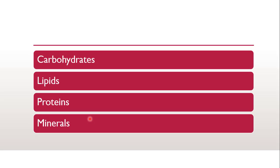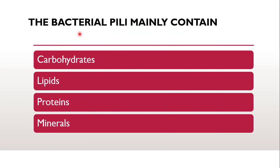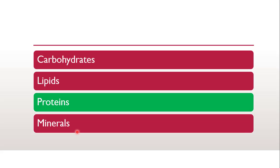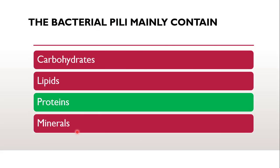The next question is: the bacterial pili mainly contains — whether carbohydrates, lipids, proteins, or minerals. According to the bacterial cell structure, the various minute projections from the cell are pili, which contain mainly the protein called pilin. This pili is more common in gram negative bacteria and is mainly found in bacteria which deal with the exchange of genetic material during conjugation from one bacteria to another.